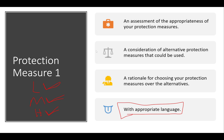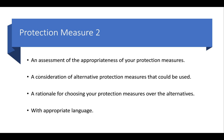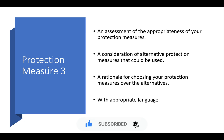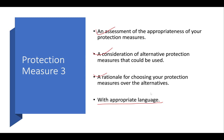For protection measure 1: appropriateness, alternatives, and rationale. For protection measure 2: the same — appropriateness, alternatives, and rationale. For protection measure 3: same again — appropriateness, alternatives, and rationale. All with the appropriate language. That's it for the activity 3 introduction. The next thing I'm going to do is jump into a Word document and fill it in as quickly as I can, then go over and explain that as well.